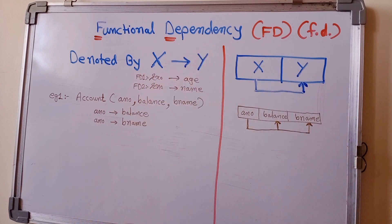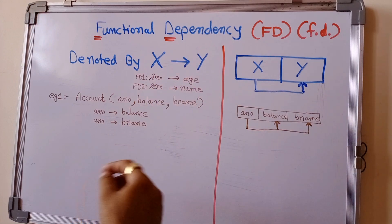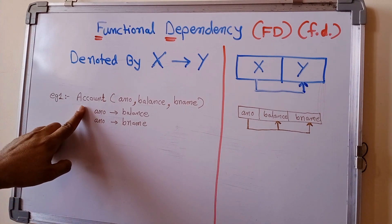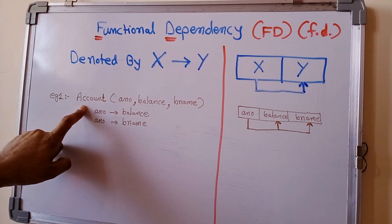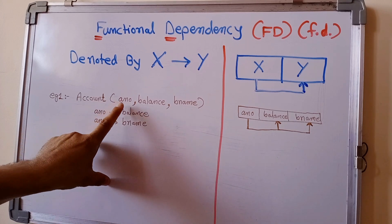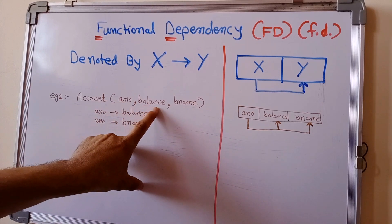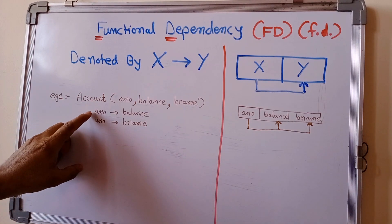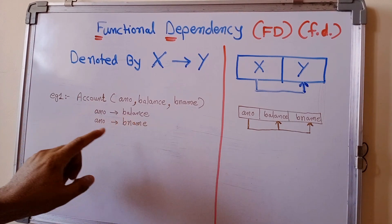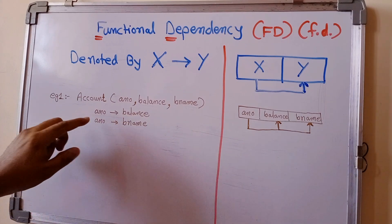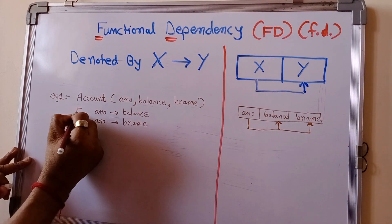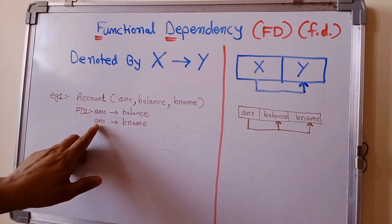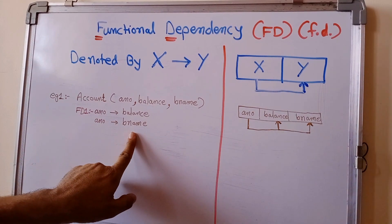Now let's take one example. Here I have taken an account table which consists of three attributes: account number, balance, and branch name. If we supply account number, we can get the balance of that account — this is the first functional dependency. Again, if we supply account number, we can get the branch name — this is the second functional dependency.